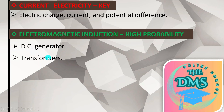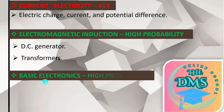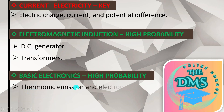Next we move to Electronics, written in green with 'high probability,' meaning it is not a key topic but has a high probability of being in the CSAS exam because it was not there in the last GCE exam nor in the 2022 internal or GCE exam. So you should expect it to be there in the CSAS internal examinations. The subtopic here is thermionic emission and electrons.